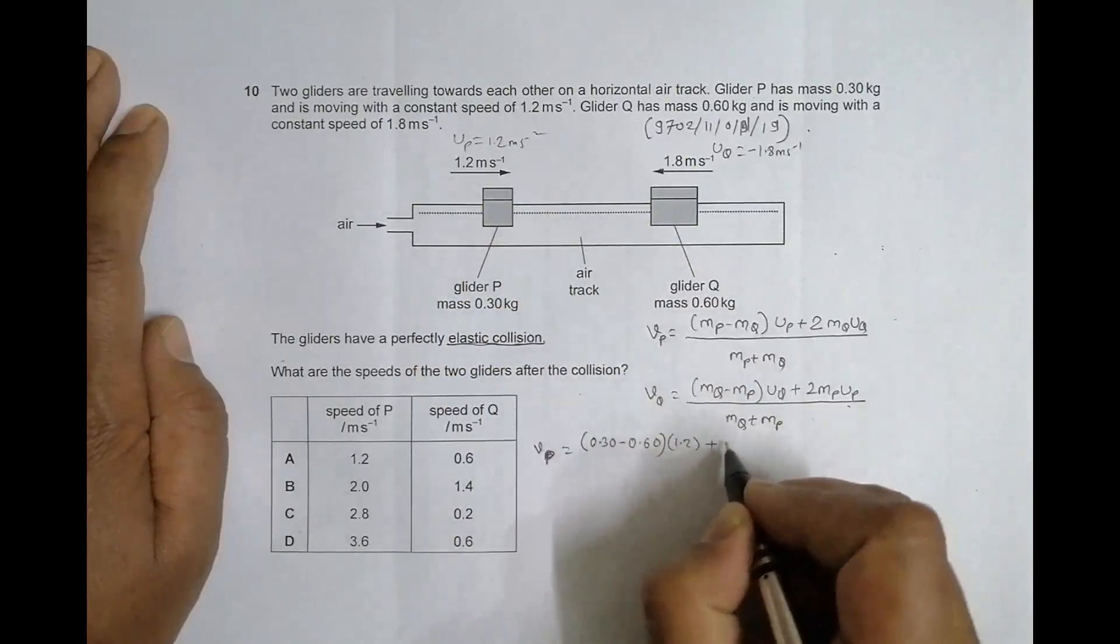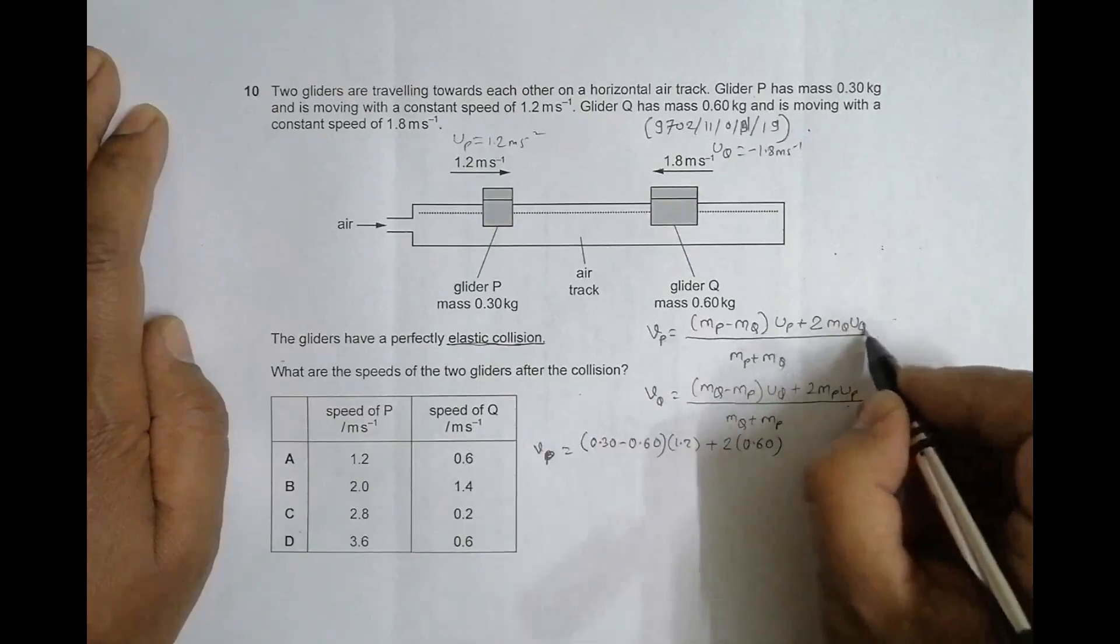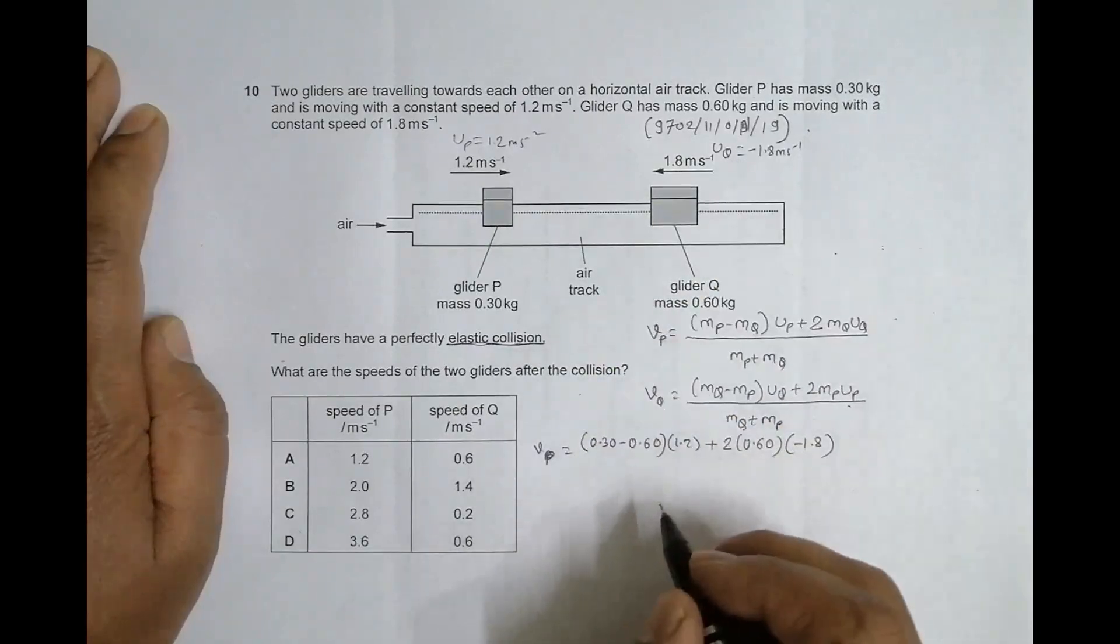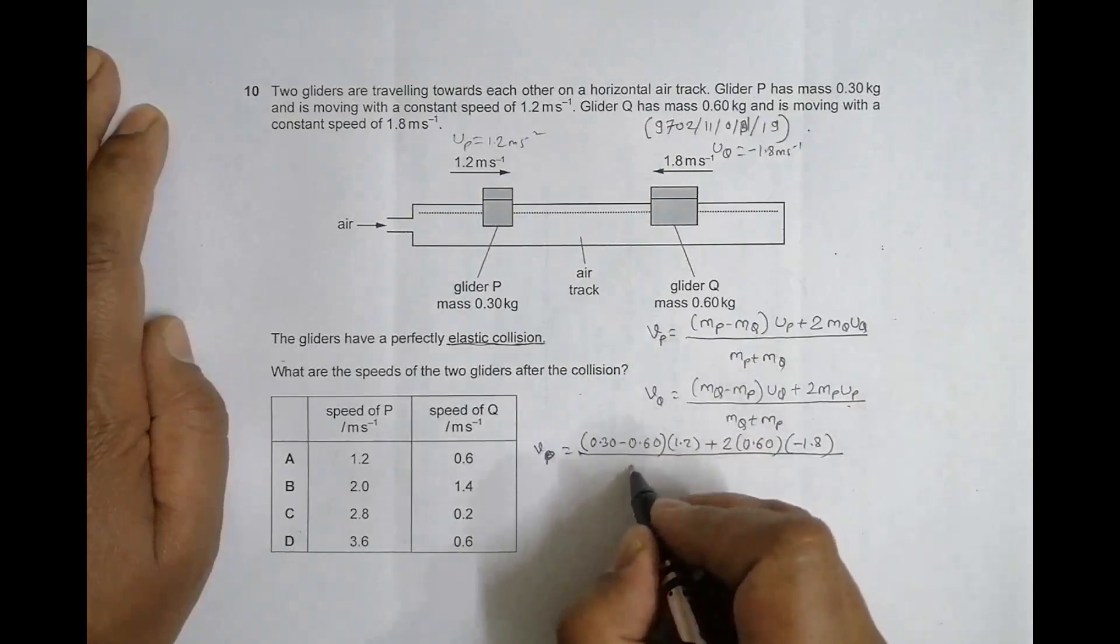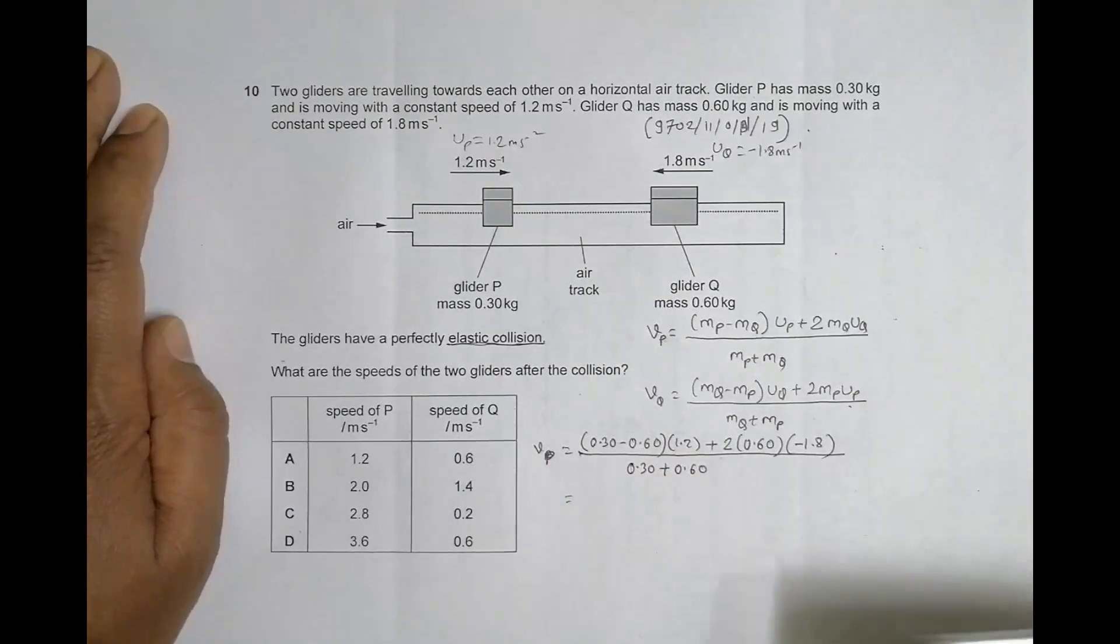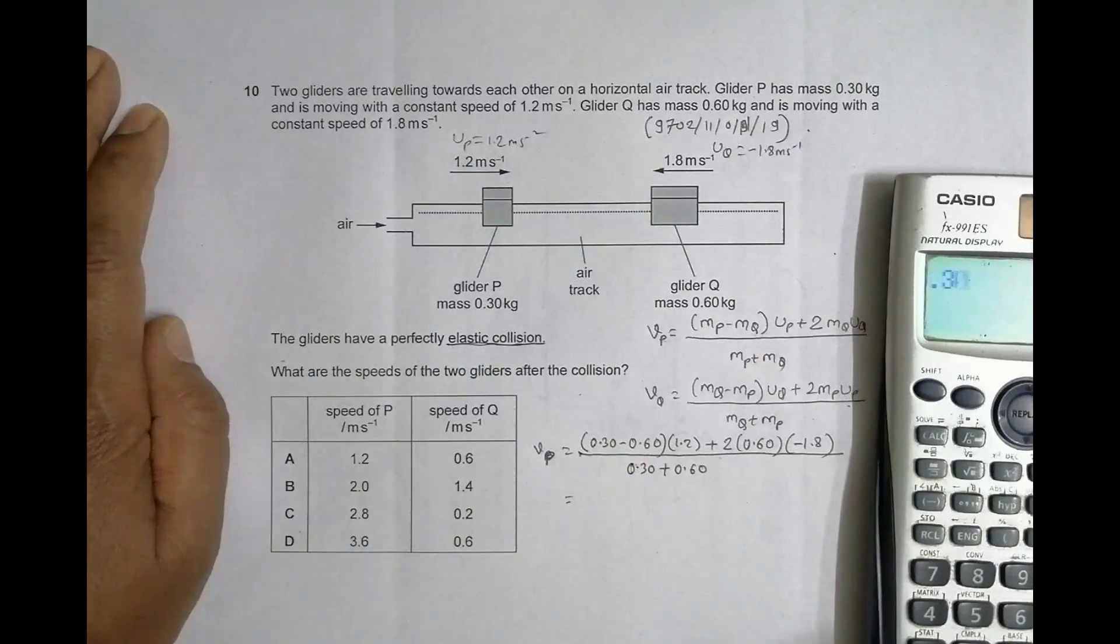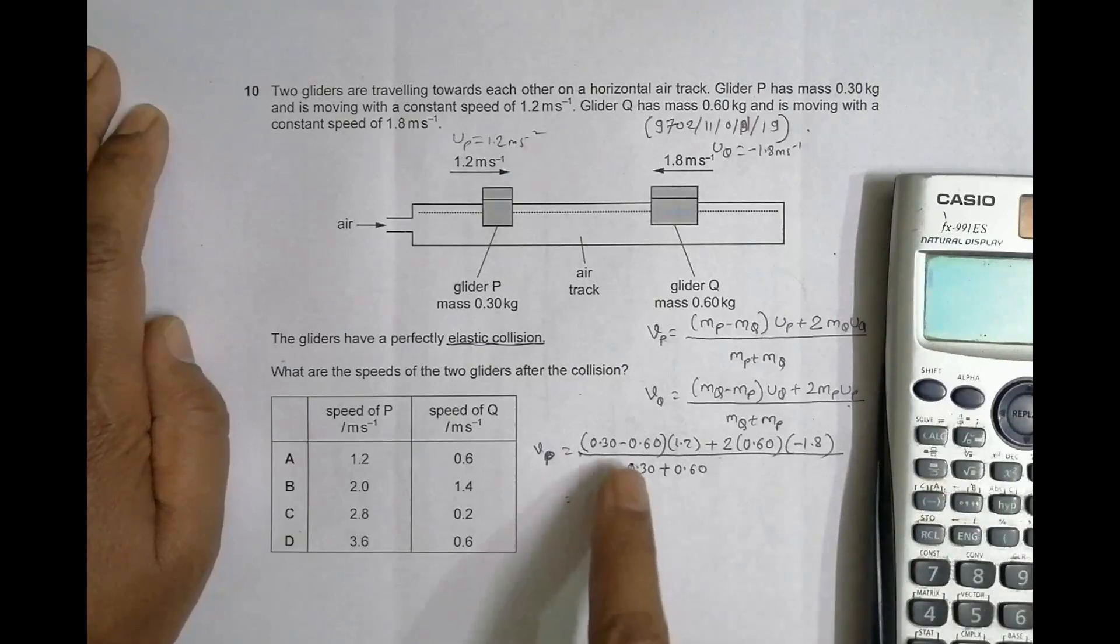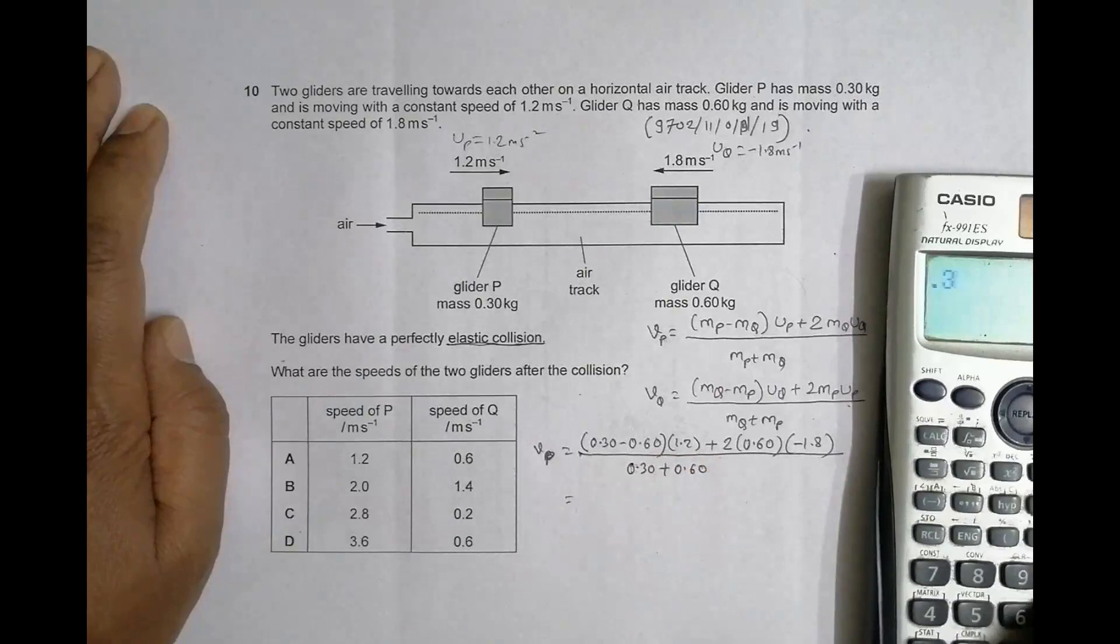MP is 0.30 minus 0.60 times 1.2, plus 2 times 0.60 times minus 1.8. In the denominator we have MP plus MQ, so 0.30 plus 0.60. The answer here will be - let me do this carefully. This is minus 0.30 times 1.2.